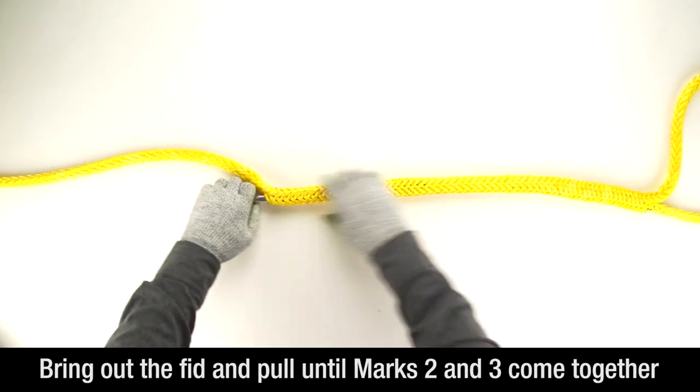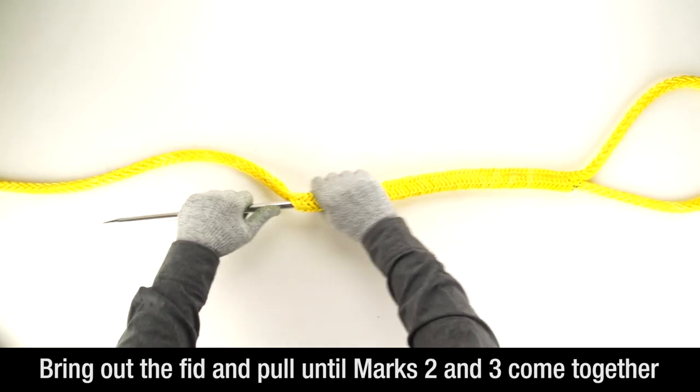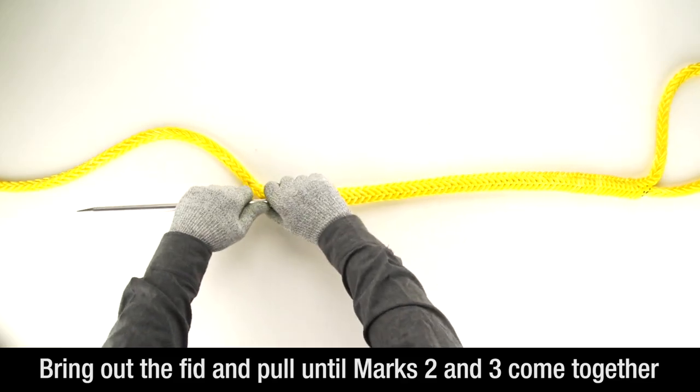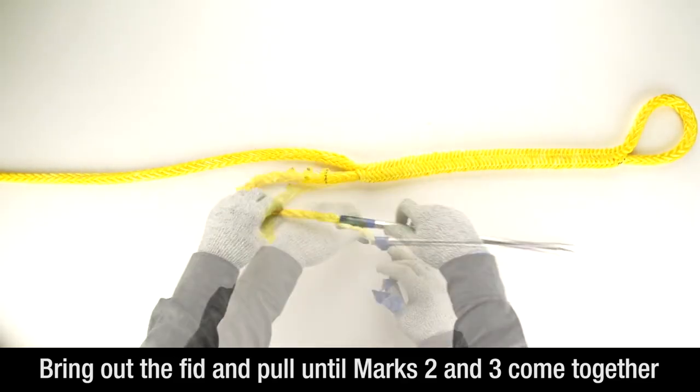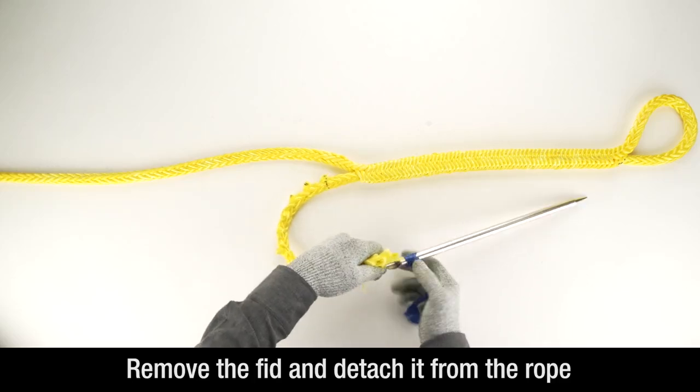Bring the fid out of the rope and pull until marks 2 and 3 come together. Remove the fid and detach it from the rope.